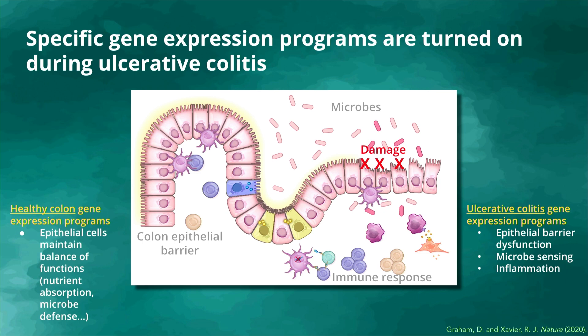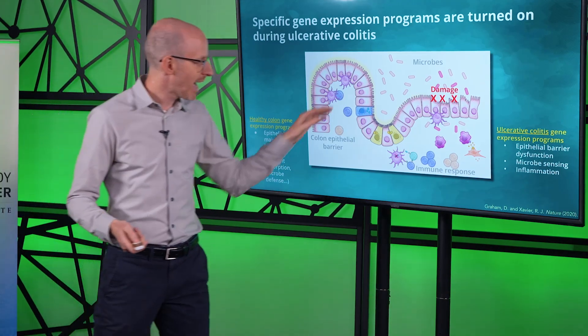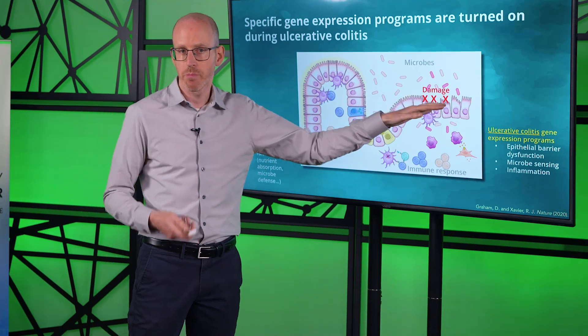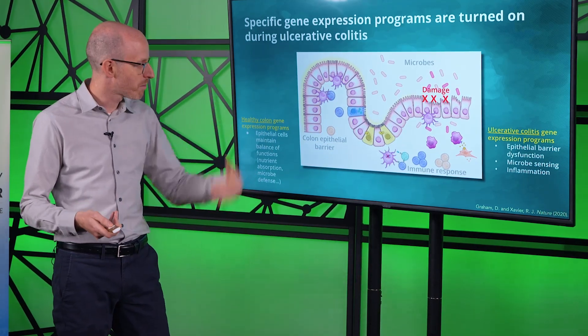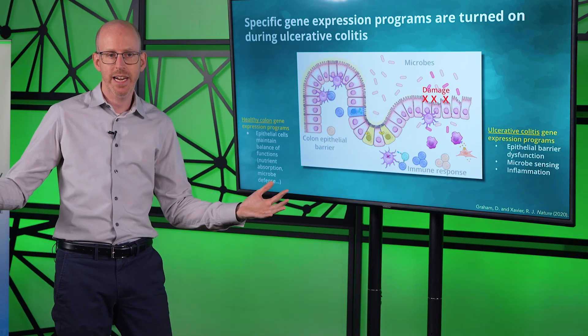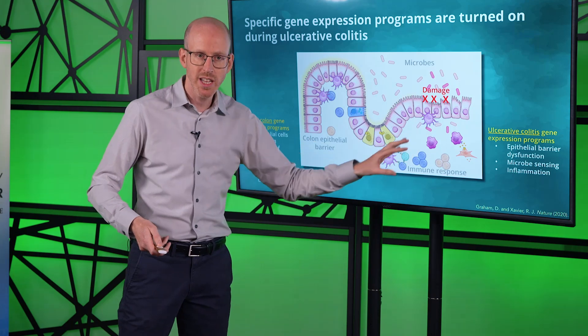Returning to our cartoon of the colon epithelial barrier: in healthy colon, many gene expression programs are turned on to keep the tissue in homeostasis — including programs for nutrient absorption and microbe defense. However, in ulcerative colitis, as the colon epithelial barrier is damaged and microbes start migrating in, you get gene expression programs involved in epithelial barrier dysfunction. The cells are under stress, and you start to see programs involved in microbe sensing, followed by an early immune response with inflammation that progresses to chronic inflammation.